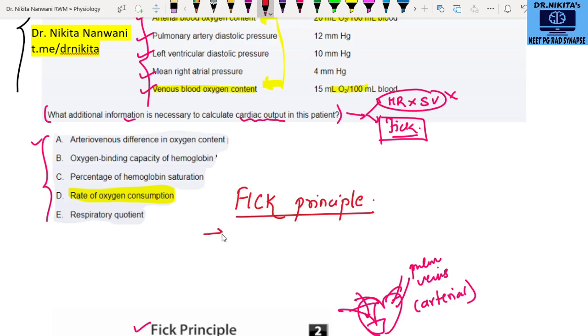Remember the other methods to calculate cardiac output could be your dye dilution technique or thermodilution technique. We can use MRI, we can use Doppler along with echocardiography. These are the other methods for calculating cardiac output.